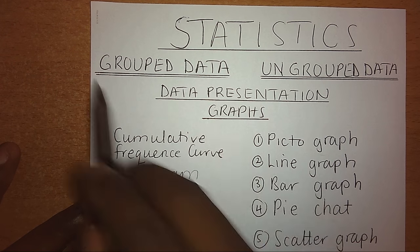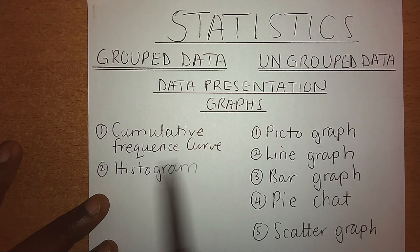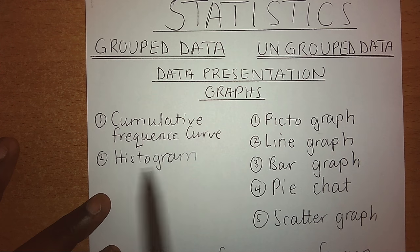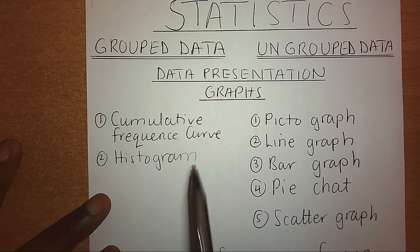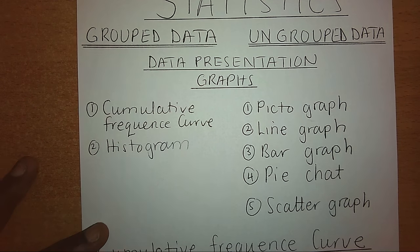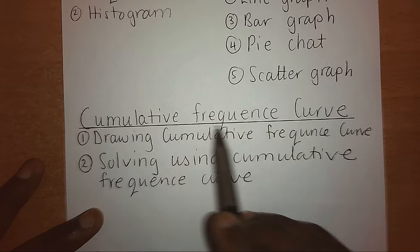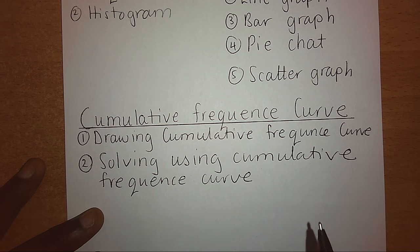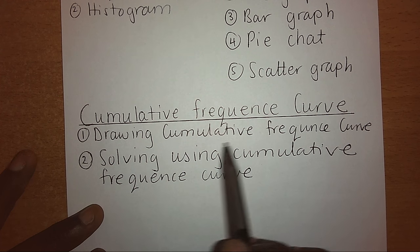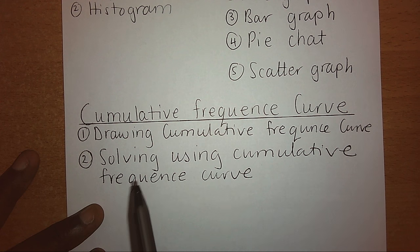When you go to grouped data, we have what we call the cumulative frequency curve and the histogram. These are the main common graphs that we always make. Specifically today we are going to look at the cumulative frequency curve formed under grouped data. We want to see how to draw it and how to answer questions using the cumulative frequency curve.